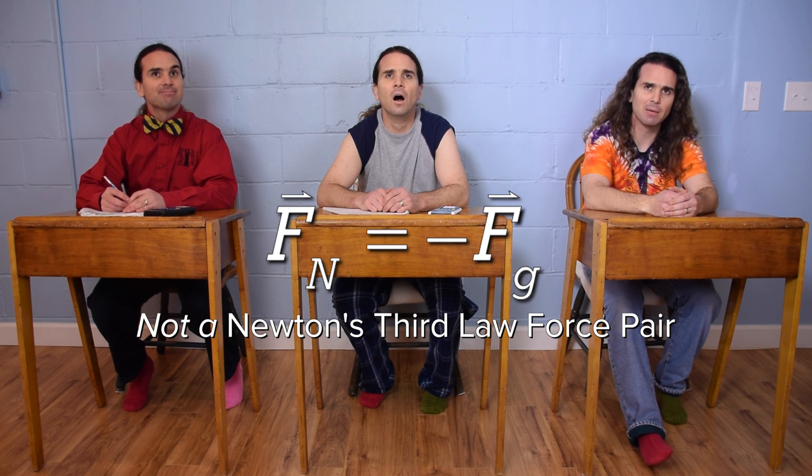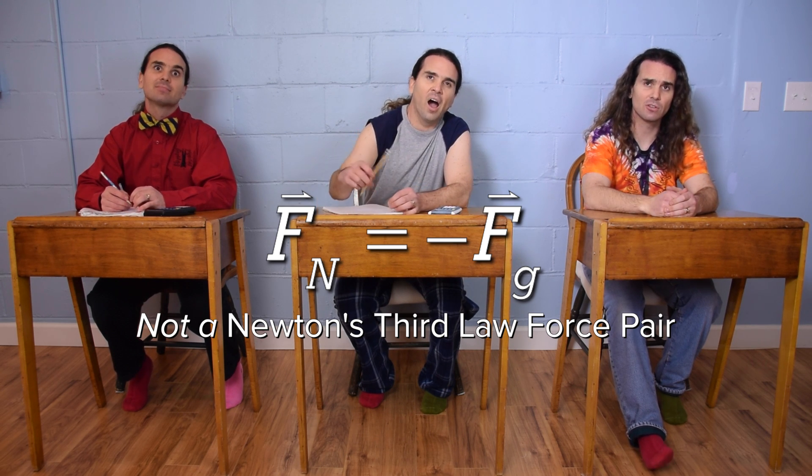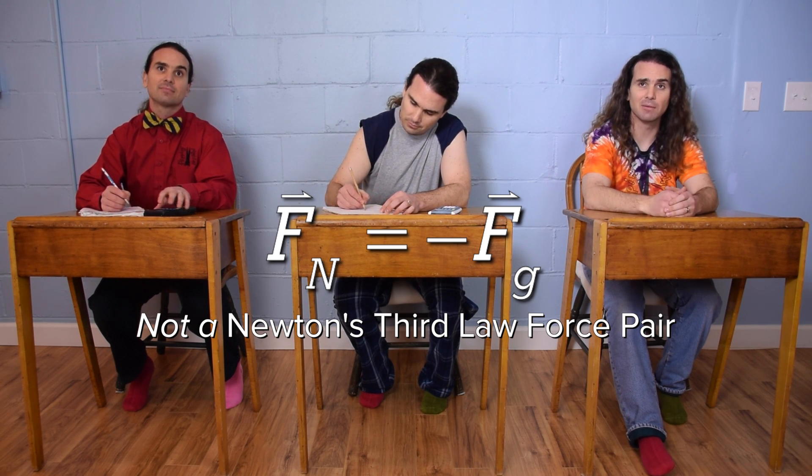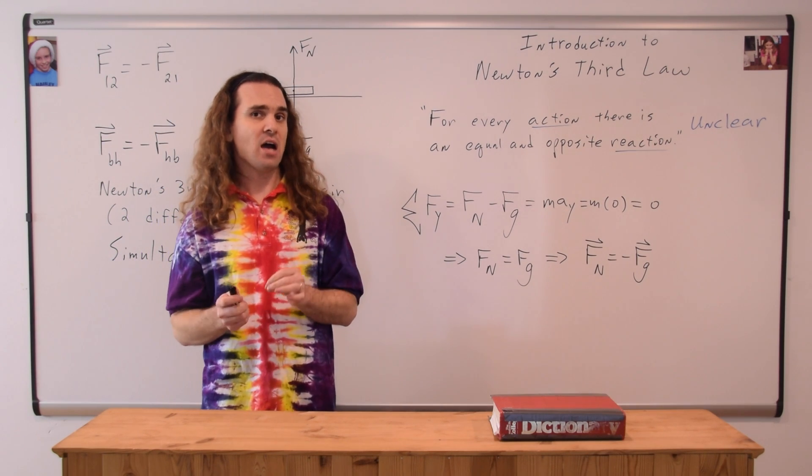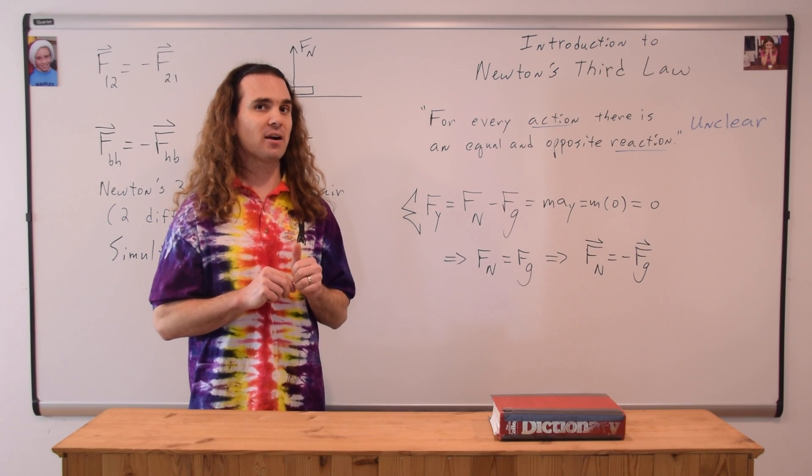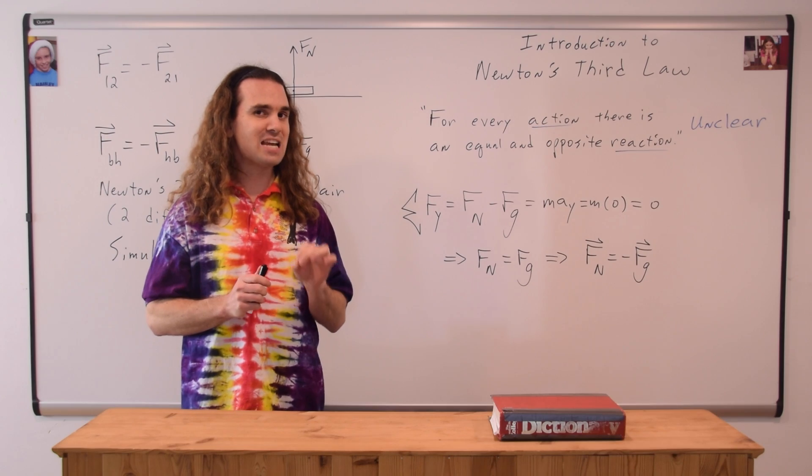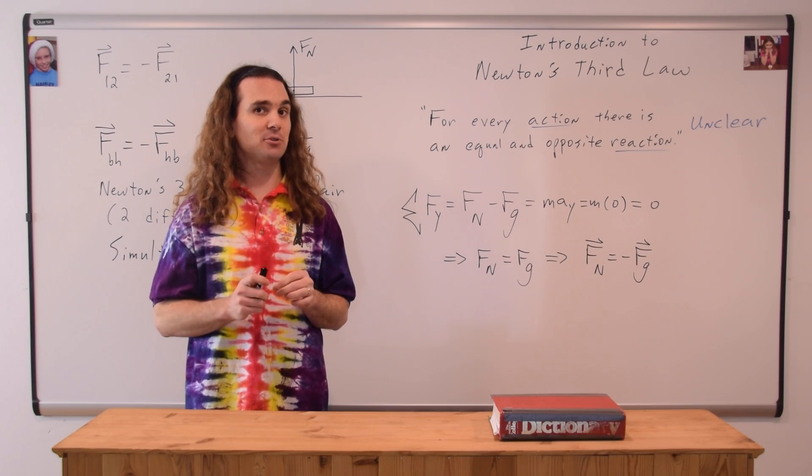Because the two forces act on the same object, the book. Newton's third law force pairs act on different objects. Correct, the force normal and the force of gravity do not form a Newton's third law force pair, because those two forces do not act on the same object.